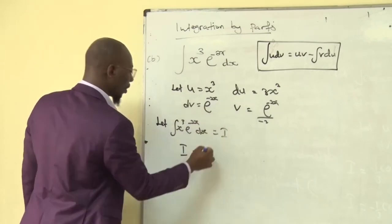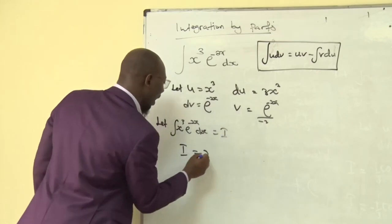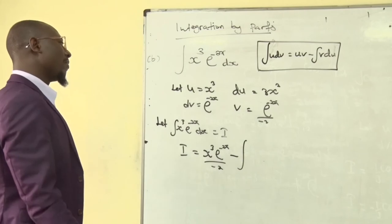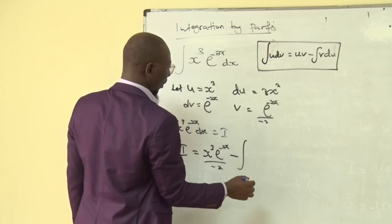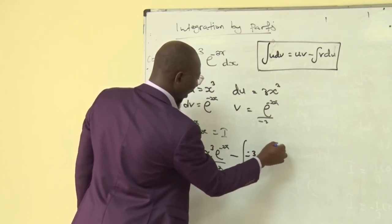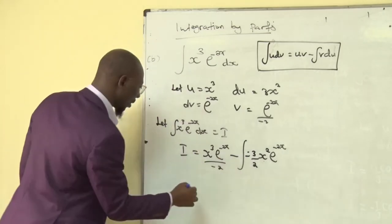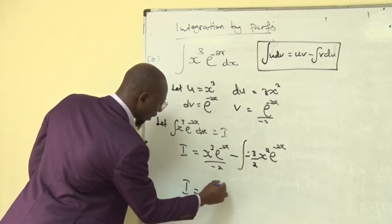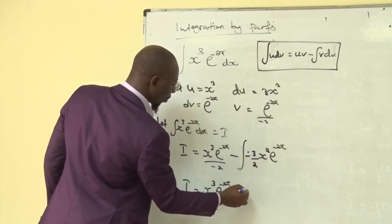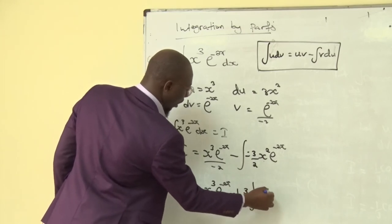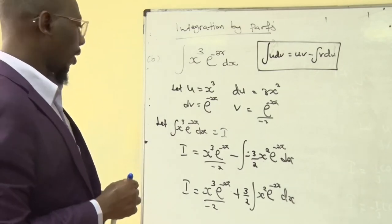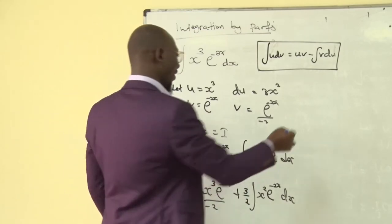Substituting into the formula, I = u·v minus the integral of v·du. That gives: I = x³·e^(−2x)/(−2) − ∫[e^(−2x)/(−2)]·3x² dx. The two negative signs cancel, giving I = −(1/2)·x³·e^(−2x) + (3/2)·∫x²·e^(−2x) dx. This new integral is again a product of two functions, so we apply integration by parts again.